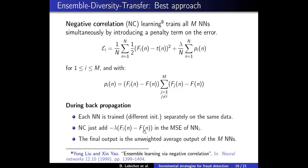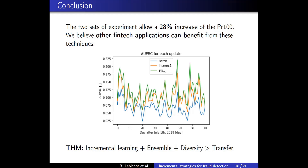It is time to conclude. The two sets of experiments allow a 28 percent increase in average Precision@100. We believe other fintech applications can benefit from this technique. Here we plot the area under the precision-recall curve for each testing day: in blue the classical batch approach, in orange incremental learning with only one neural network, and in green the final approach with negative correlation learning. The key take-away is that such improvement was possible because of incremental learning, ensemble and diversity, and transfer learning at a smaller role. It also allows a lower computational cost thanks to incremental learning.